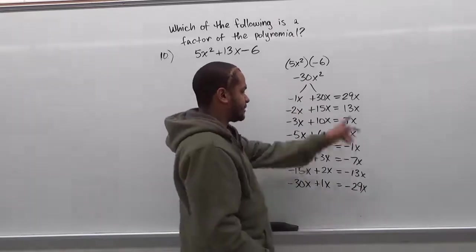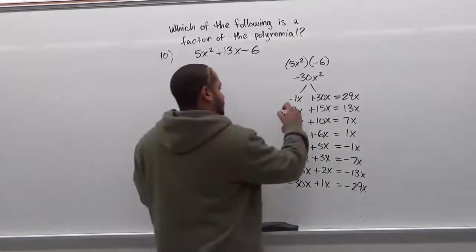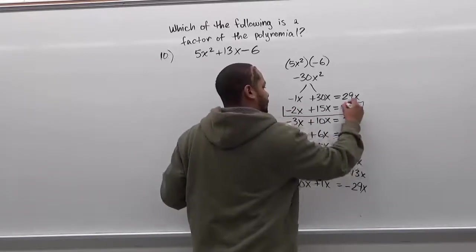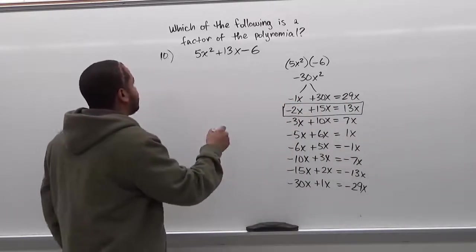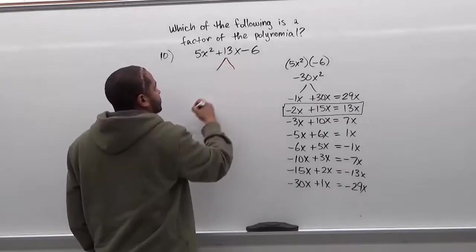Now we see we can make all the opposite sums happen but we're looking particularly for 13x. So we see here we have the substitution we're looking for, negative 2x plus 15x. So here we're going to take this term and we're going to separate it into two new terms.